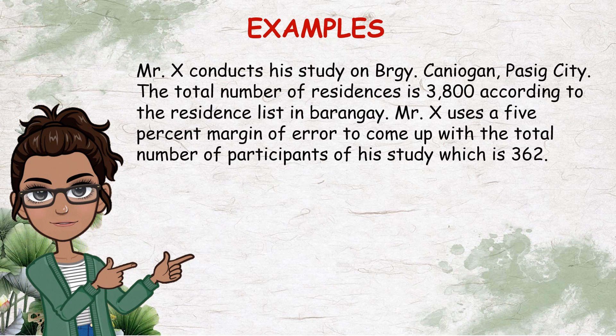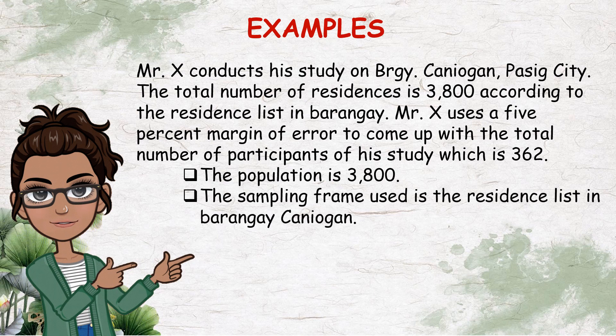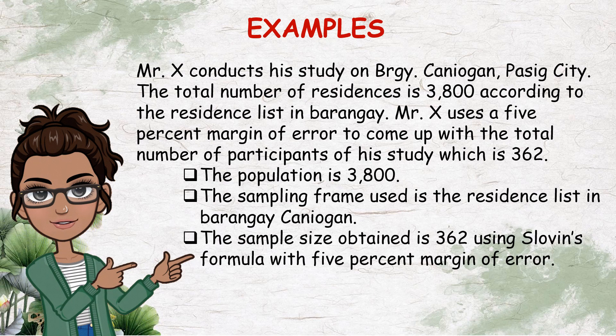Example number 1. Mr. X conducts his study on Barangay Kanyogan, Pasig City. The total number of residences is 3,800 according to the residence list in Barangay. Mr. X uses a 5% margin of error to come up with the total number of participants of his study, which is 362. From this example, you can say that the population is 3,800, the sampling frame used is the residence list in Barangay Kanyogan, and the sample size obtained is 362 using Sloven's formula with 5% margin of error.